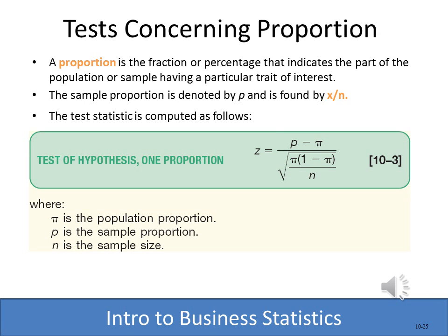The final hypothesis test in this lesson is a test concerning proportion — a percentage or ratio of those meeting a certain category, like the number of people who pass a test divided by the entire class. We use pi to represent the population proportion, p for the sample proportion, and n for the sample size. The formula for z is the sample proportion minus the population proportion, divided by the square root of the population proportion times one minus the population proportion divided by the sample size. We still go through the same five steps; only the formula changes. We compare that z to the critical value and decide whether to reject or not reject the null hypothesis.